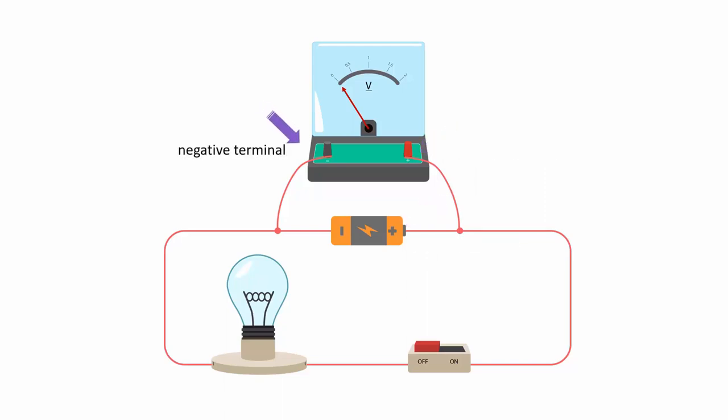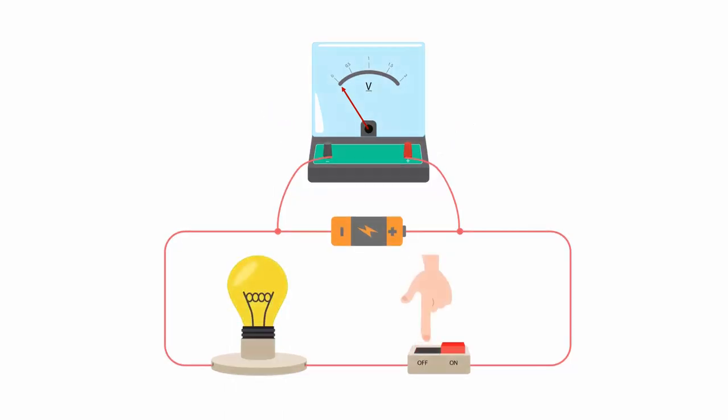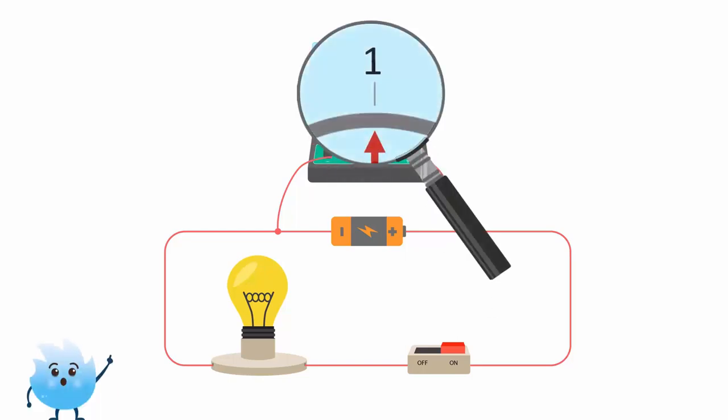Its positive terminal is connected to the positive terminal of the battery and the negative terminal is connected to the negative terminal of the battery. Just like an ammeter, the positive terminal of the voltmeter can be identified by a red color and the negative terminal by a black color. When the switch is closed, the deflection of the needle shows the voltage across the circuit. The potential difference in the circuit is one volt.